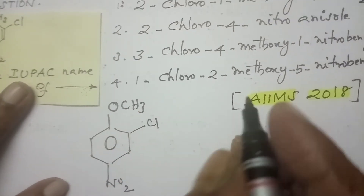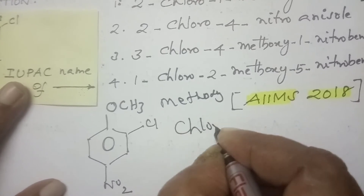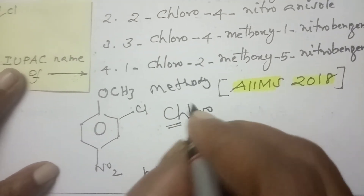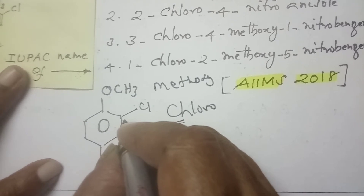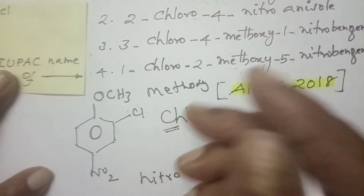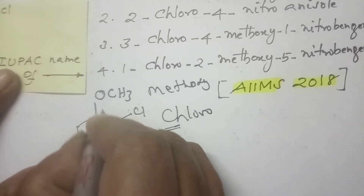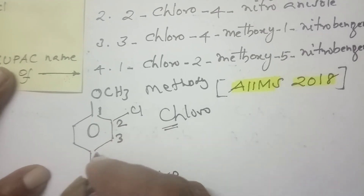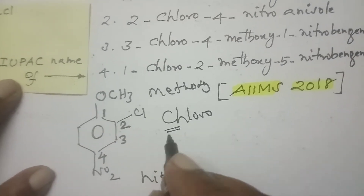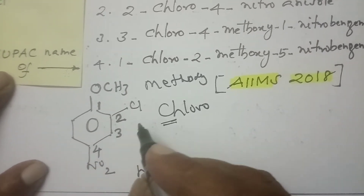Let me write the name of each substituent. This one we call methoxy. Here Cl is chloro. This is nitro. According to alphabetical order, chlorine has to come first. So I have to do the numbering. Starting from here, the lowest locant rule — I select the direction in which the lowest number comes for Cl. Taking numbering 1, 2, 3, 4 — the least number 2 is coming. Now start to write the IUPAC name. According to alphabetical order, chlorine occupies position number 2. So: 2-chloro.